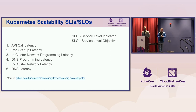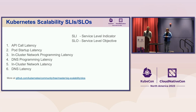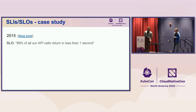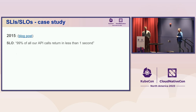Let's take a look at one example. One of the main SLOs we have is API call latency. This is how the SLO was defined in the first blog post published in the Kubernetes blog in 2015 — it's more than eight years old at this point. How it looked back then was: 99% of all API calls returned in less than one second. There is a problem with this SLO — my understanding of it and many of yours are very different, and this is a problem because SLOs are our contract with users.